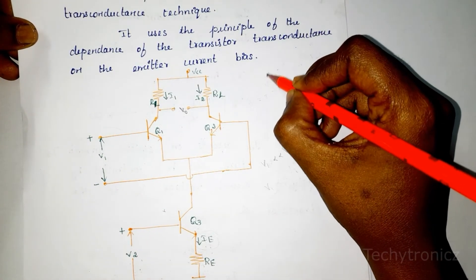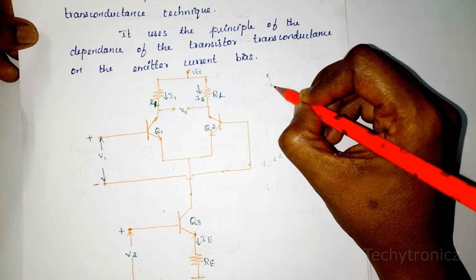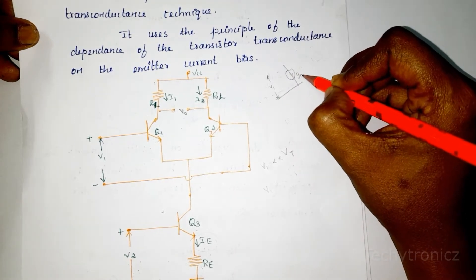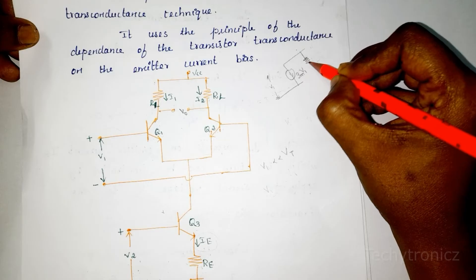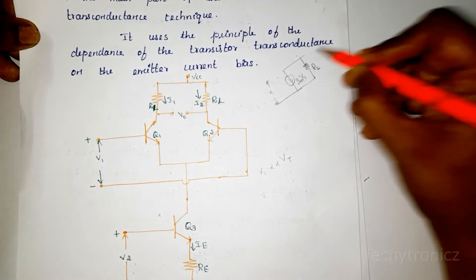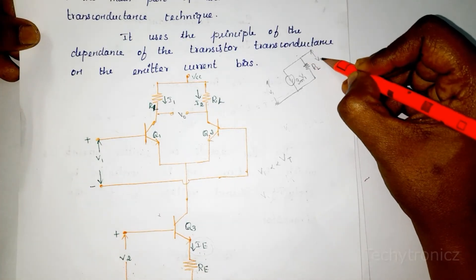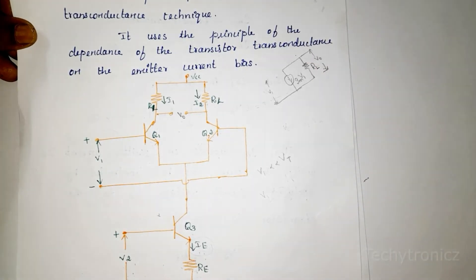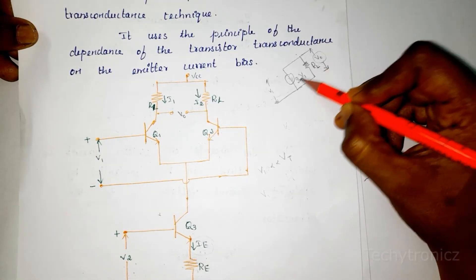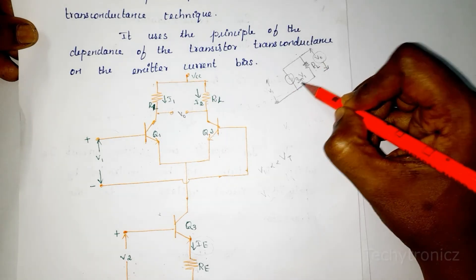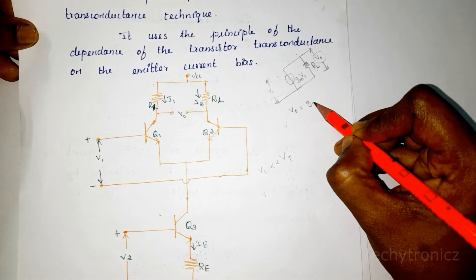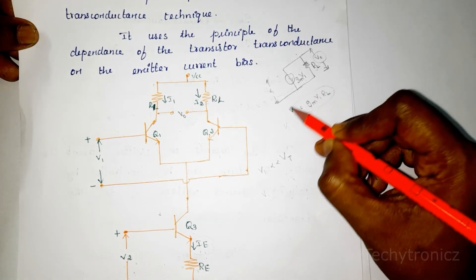Looking at the equivalent circuit for the transistor: the input voltage is V1, and there is a current source equal to gm times V1, with output resistance RL. This is the equivalent circuit. The output voltage is across the RL resistance. So we are going to find the V0 value: V0 equals I times R.